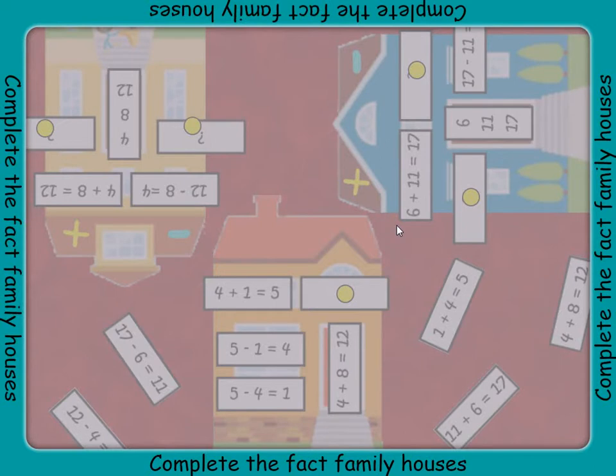These fact family houses are missing some of their facts. Find the missing facts and drag each one to the correct place in each house to complete the fact family. Look carefully for plus or minus symbols to help you know which type of fact goes on which side of the house.